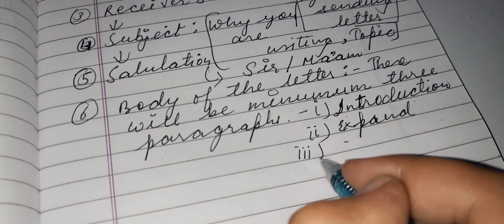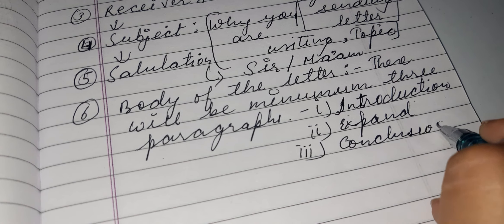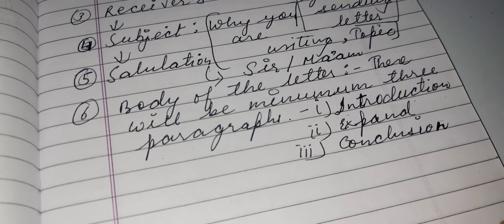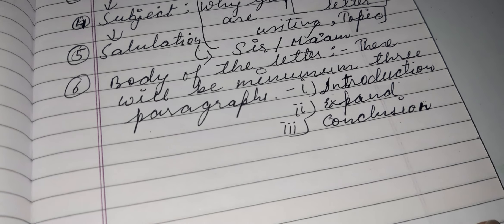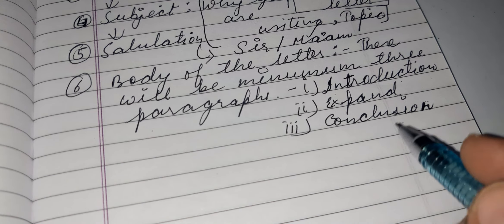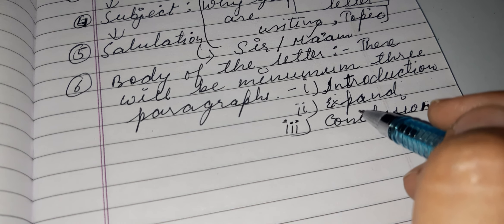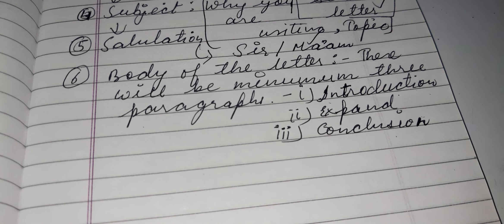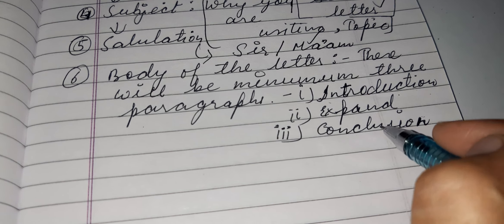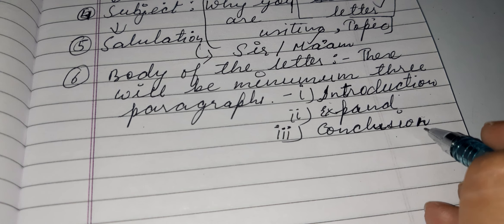Then at last, third, you will write the conclusion. Conclusion means what should be done. As you are writing this letter and have told about the problem the society is facing, now you write what you want — that you want this letter to be published in the newspaper so that the higher authorities can take action. That is the conclusion.